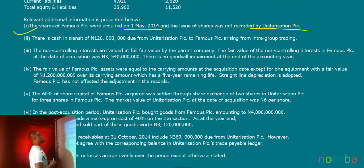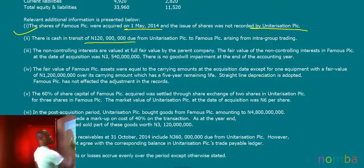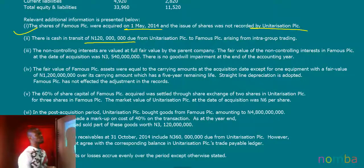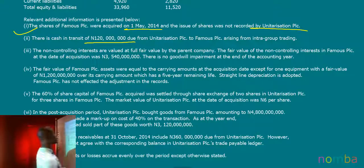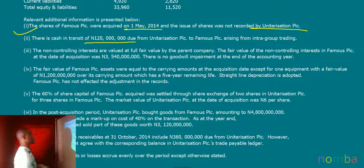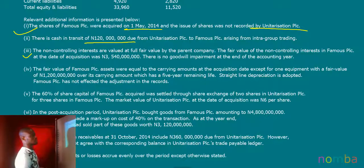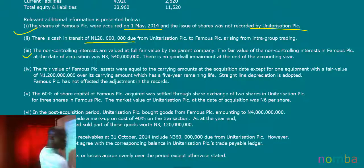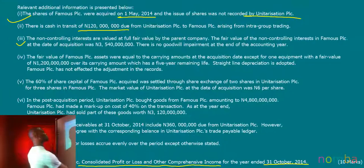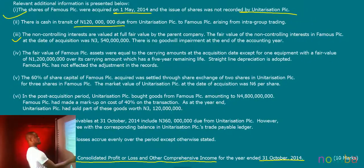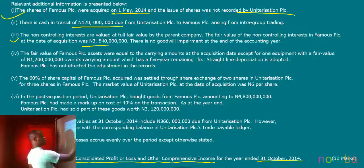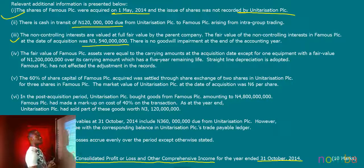Additional information two tells us there is a cash in transit of 120 million due from Unitarization PLC to Famous PLC arising from intra-group trading. Additional information three states that the non-controlling interests are valued at full fair value by the parent company, and the fair value of the non-controlling interest in Famous PLC at the date of acquisition was 3,540 million. We are also told there is no goodwill impairment at the end of the year.